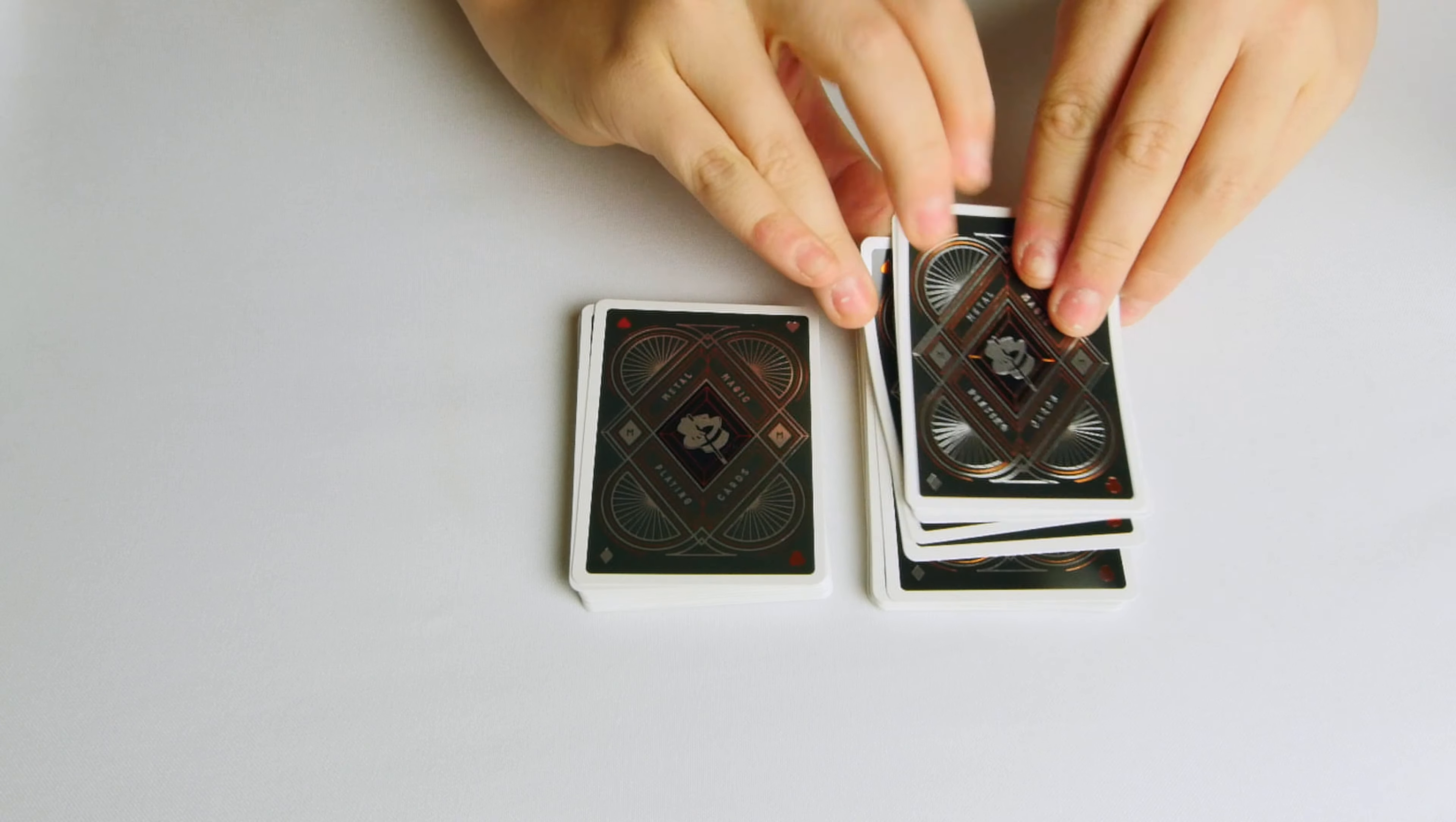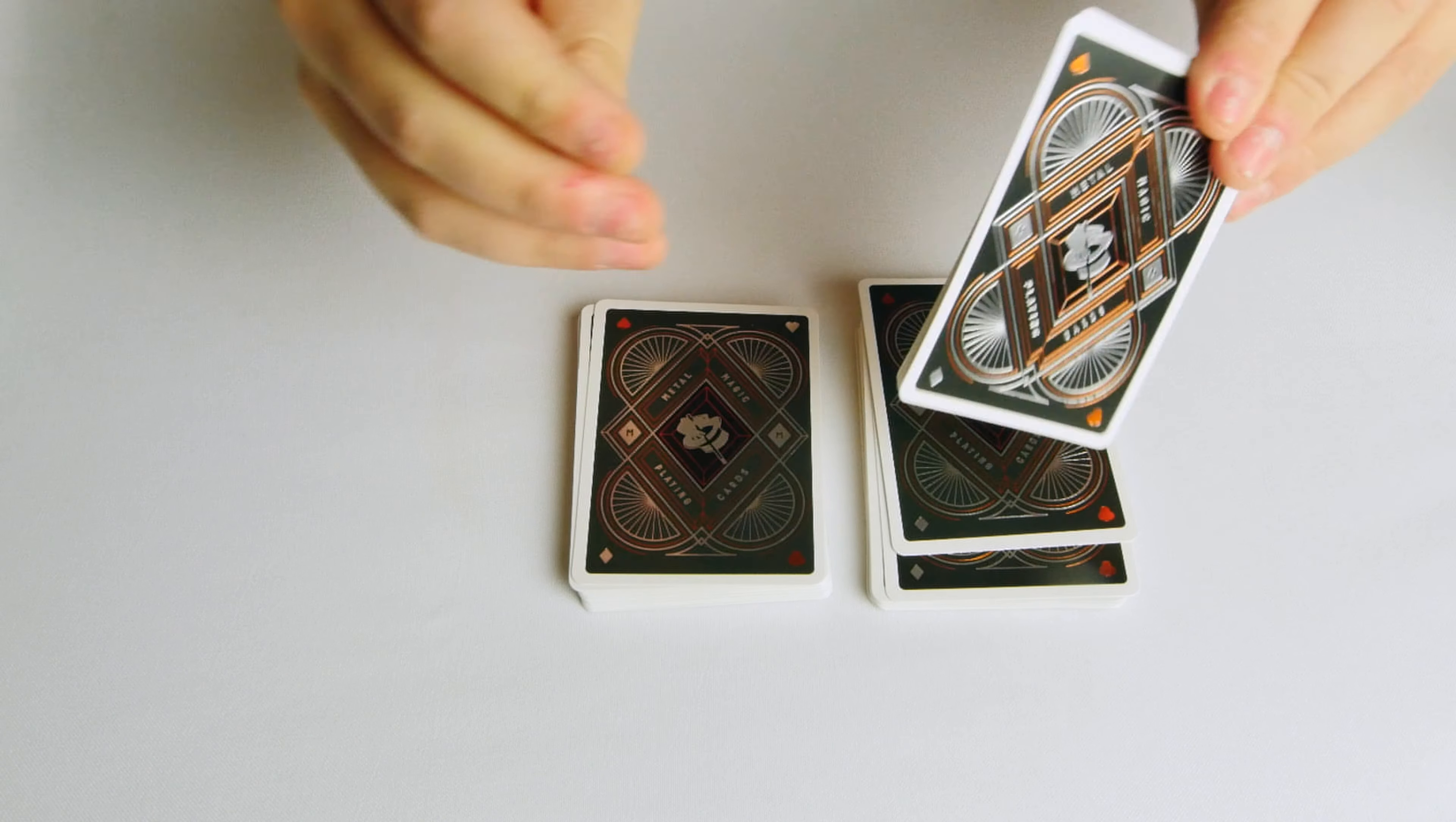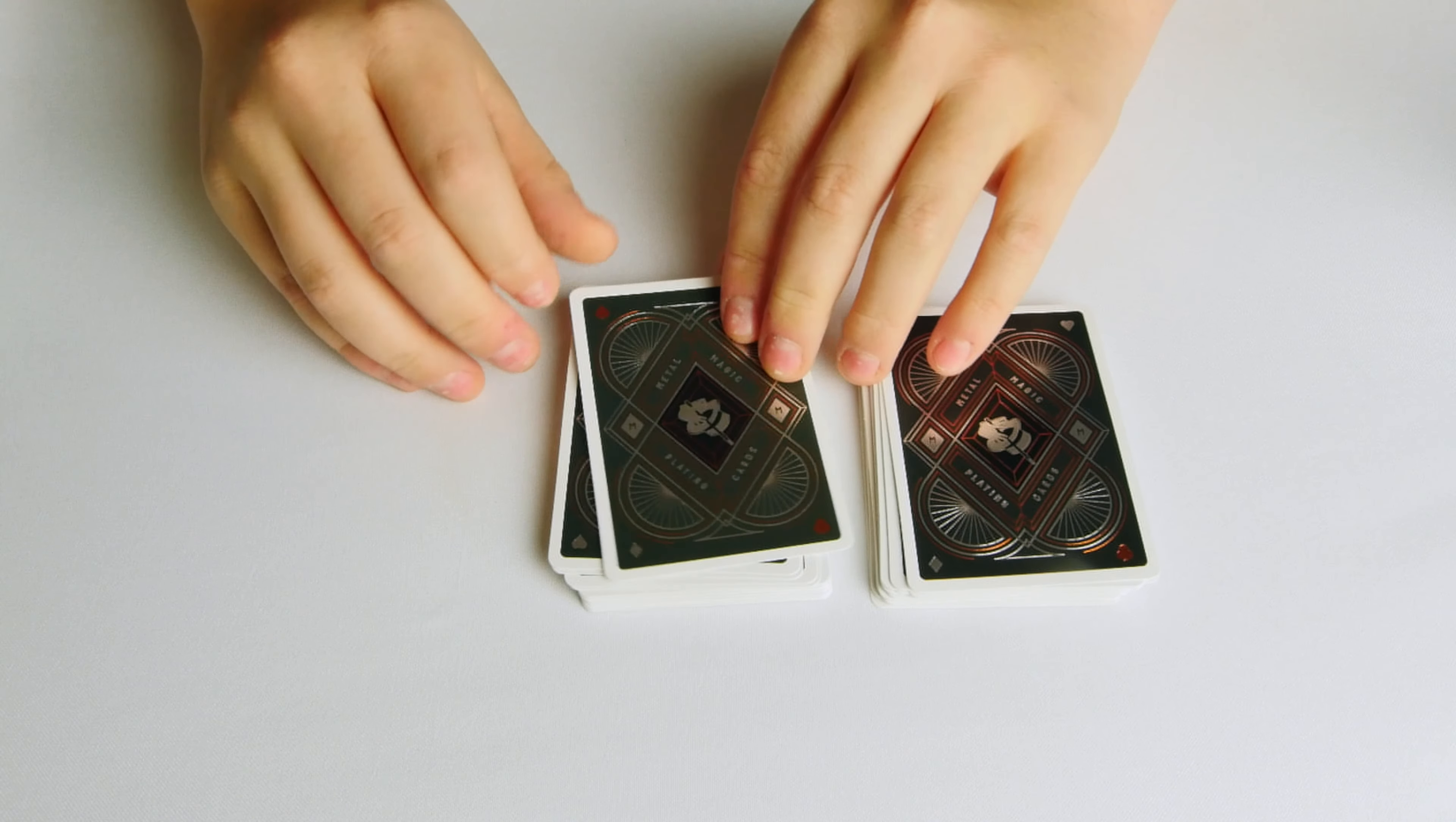So it doesn't matter when you tell them the fourth card down from this deck will tell us what the other one is. It doesn't matter what that card is, because we already know that the fourth card down is the Ace of Hearts.